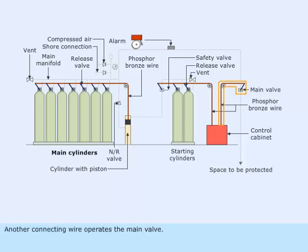Another connecting wire operates the main valve. The other end of the wire terminates inside the control cabinet.